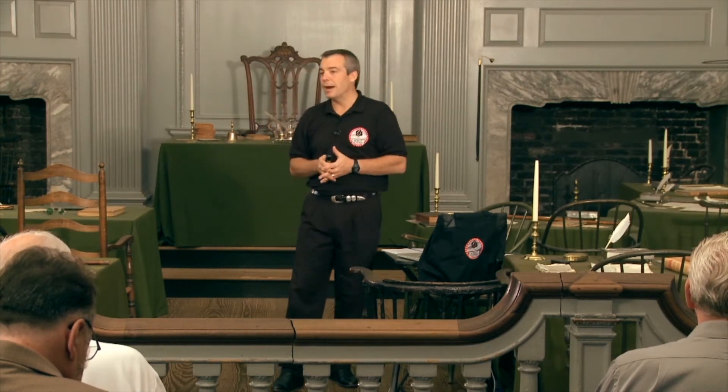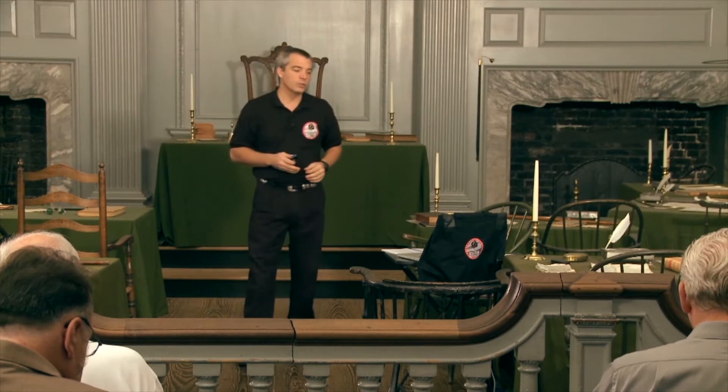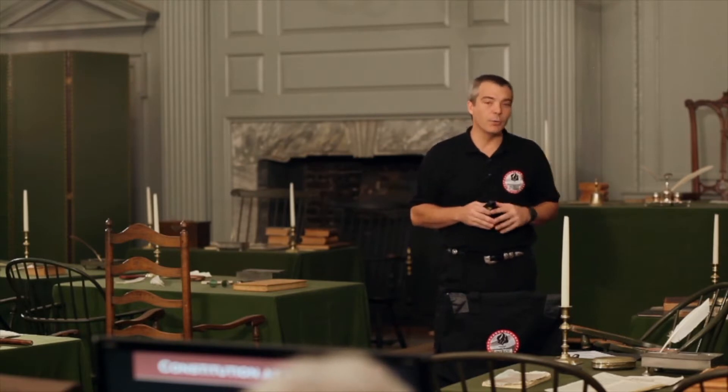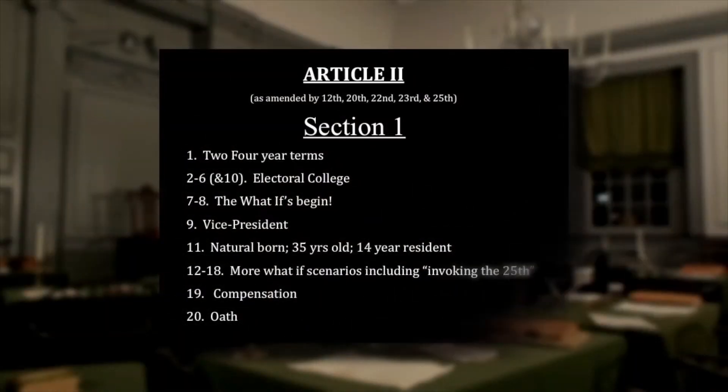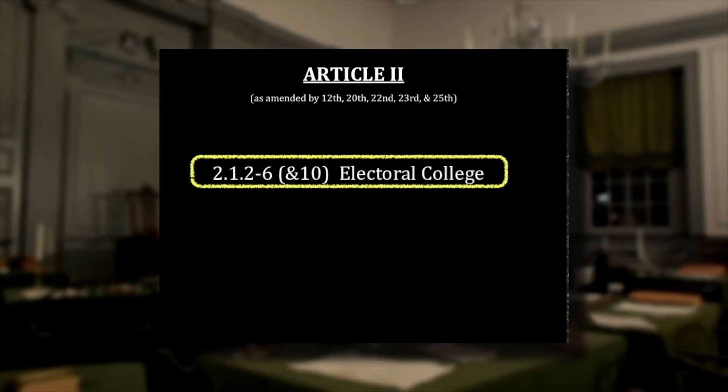We covered the seven articles, the 27 amendments, and flew through all of them to get the big picture. Then we zoomed in to the enumerated powers of Congress in Article 1, Section 8. Tonight we want to dive into Article 2 — what was the executive branch designed to do? What's the proper function of the presidency? We're going to pick out the hot topics and the things that have been in the news regarding the executive branch.